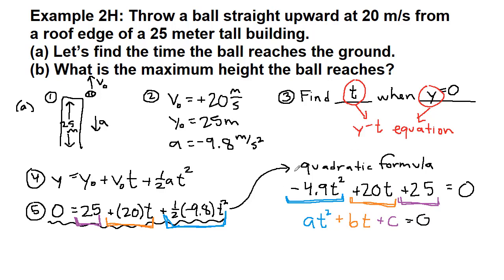The quadratic formula is at squared plus bt plus c equals 0. That's when we will use the quadratic formula because the quadratic formula itself is t equals negative b plus or minus the square root of b squared minus 4ac, and that entire thing is over 2a. To be clear, these letters a, b, and c represent the constants. In this case, a is negative 4.9, b is positive 20, and c is positive 25.